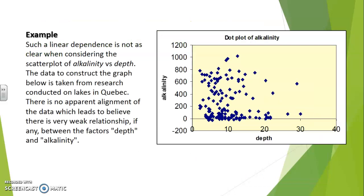In this example, a linear dependence relationship is not as clear when considering the scatter plot of alkalinity versus depth. The data to construct the graph is taken from research conducted on lakes in Quebec. There is no apparent alignment of the data, which leads us to believe that there is a weak relationship — if a relationship exists at all — between the factors depth and alkalinity.